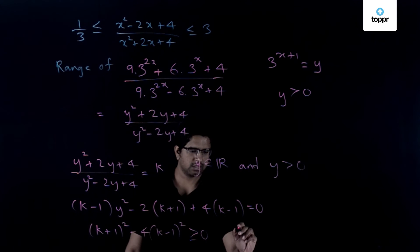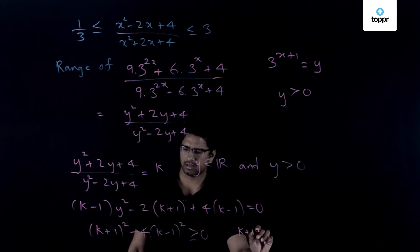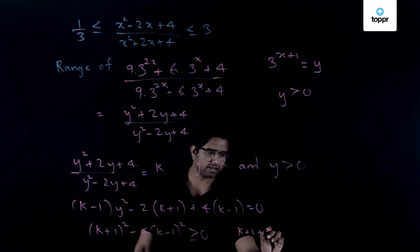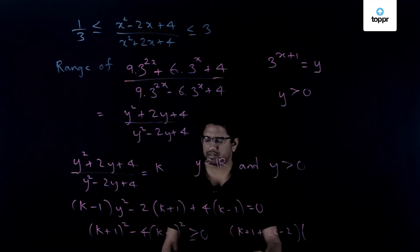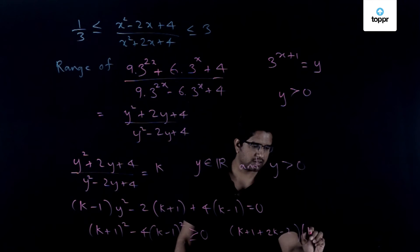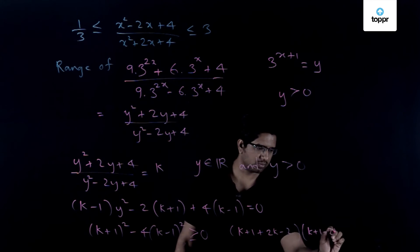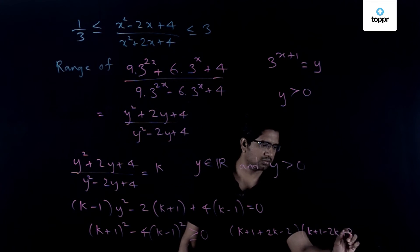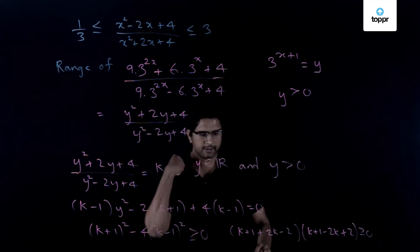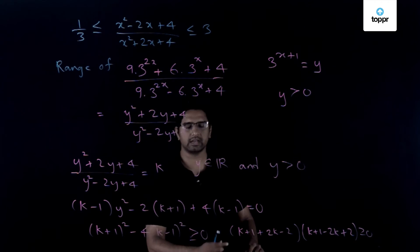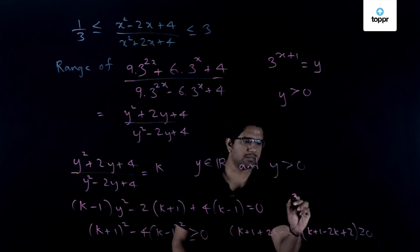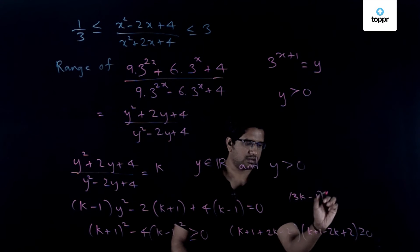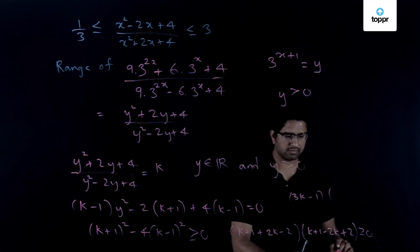So what one can write is k + 1 + 2k - 2 - k + 2. This should be greater than or equal to 0 and here one gets the condition.